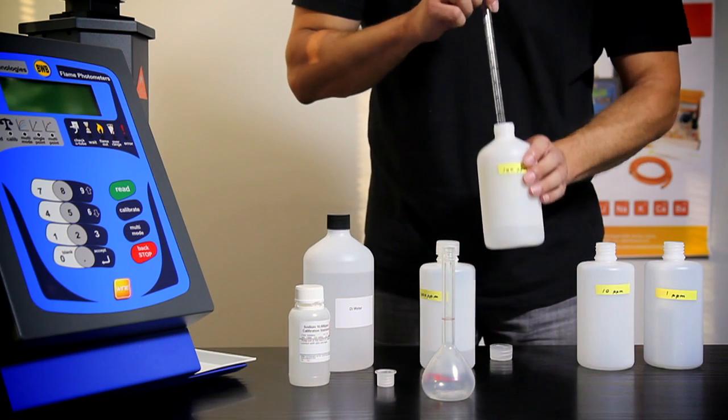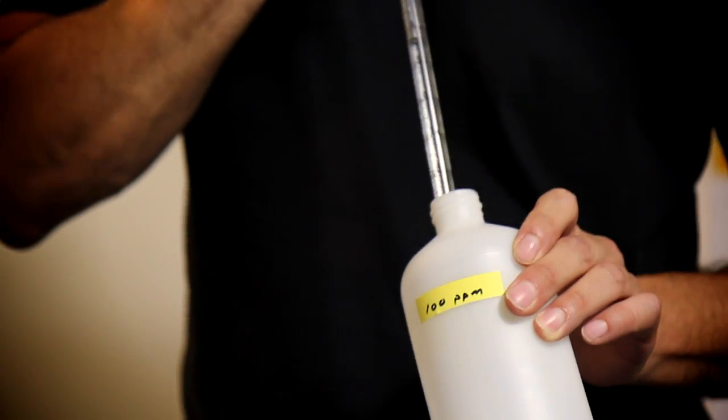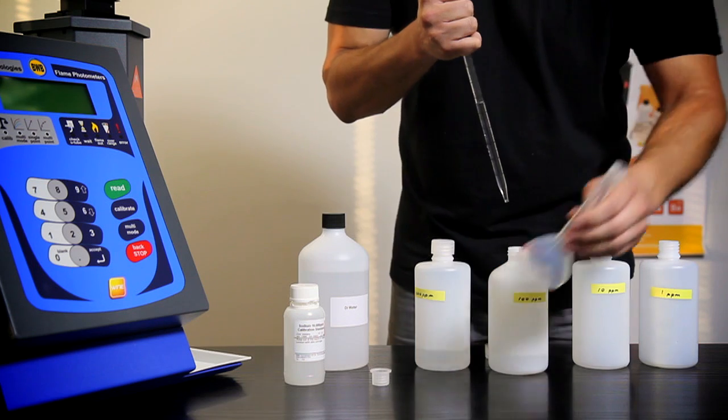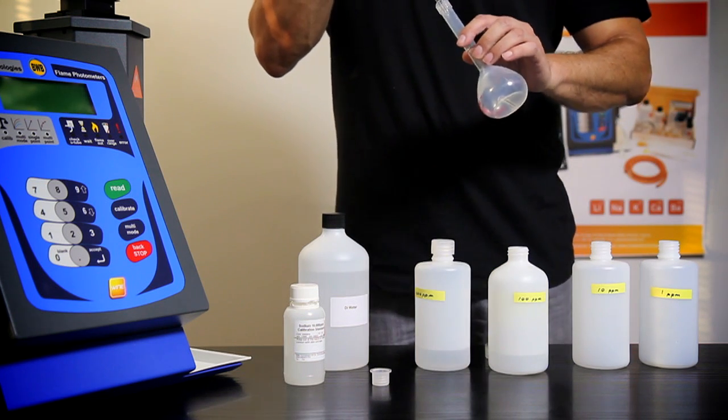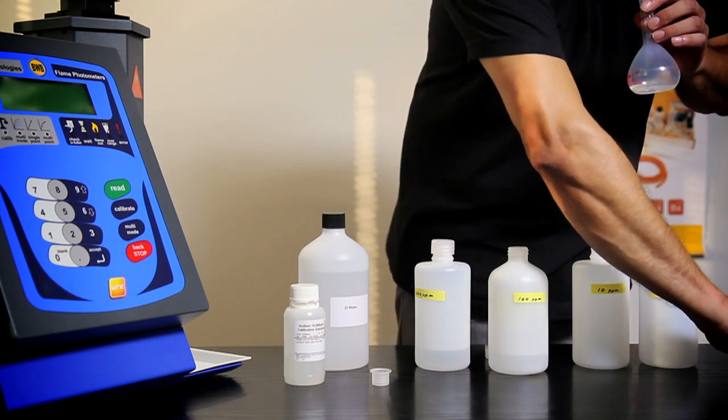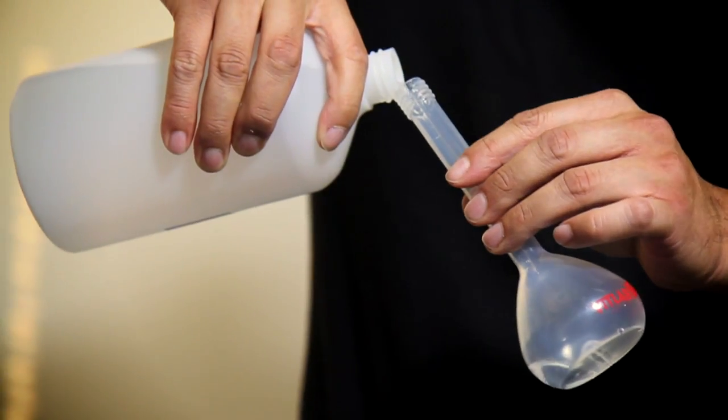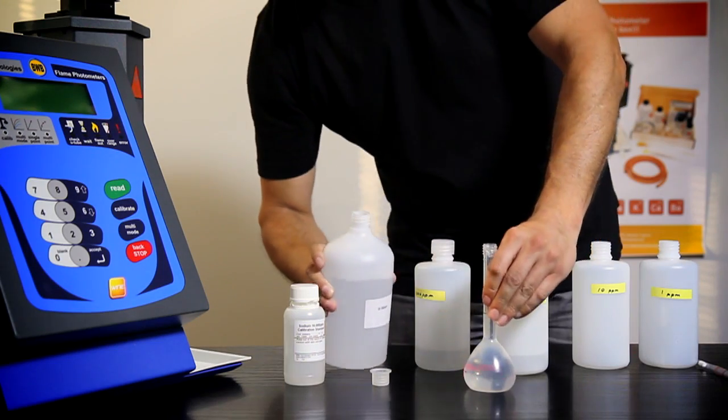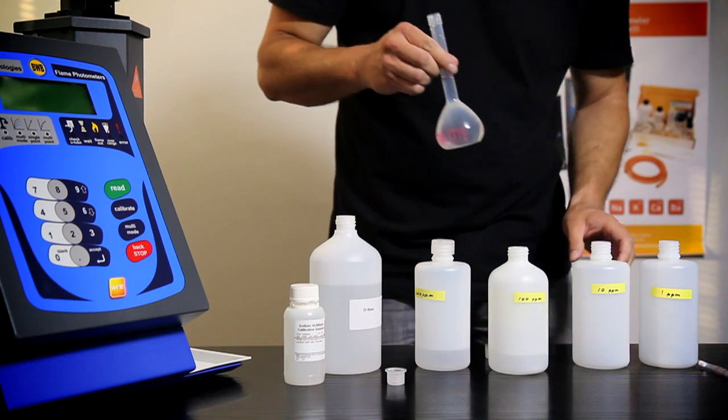For our third solution, measure out 10 ml of your 100 ppm standard using your pipette. Repeat the dilution as before. Pour into the third beaker and stir to form your 10 ppm standard.